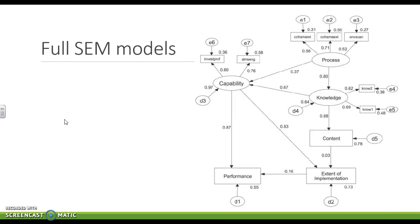And of course, we can put them all together and get crazy. Pause for a minute and think about this. So here we have capability being predicted or being indicated by two different items. Process is being indicated by three. So these are all measurement pieces. And then we have capability coming from process. Knowledge coming from process. So process is predicting both of these.